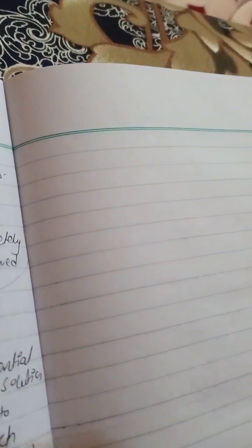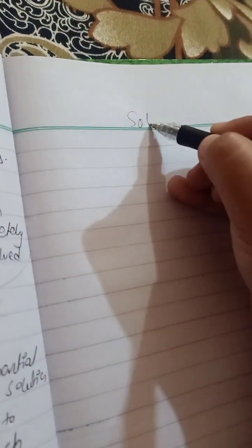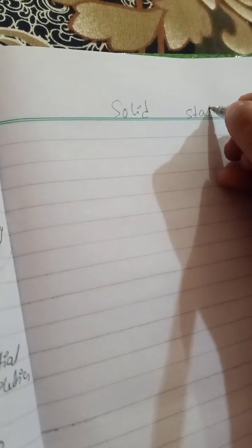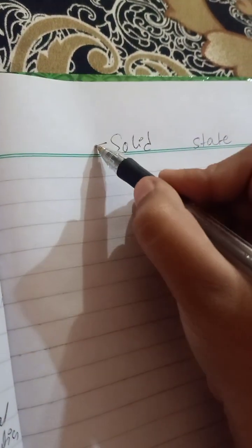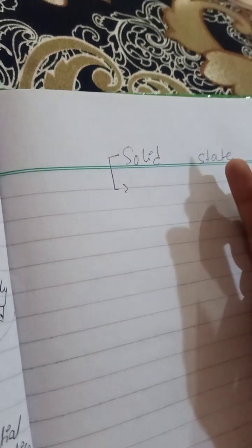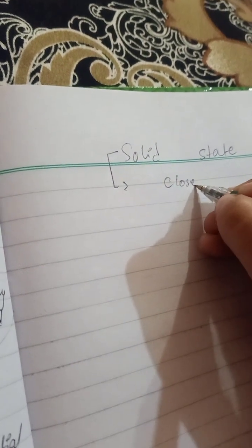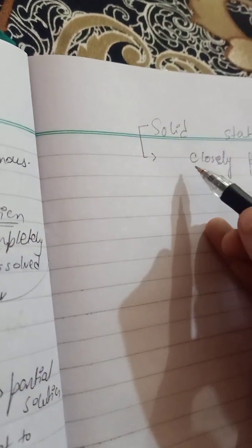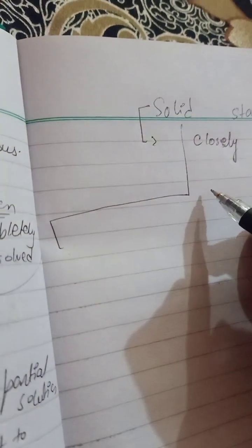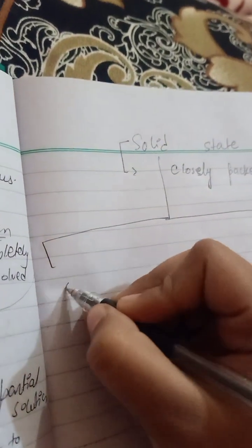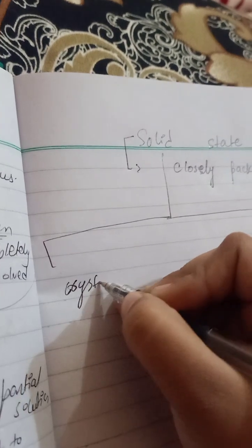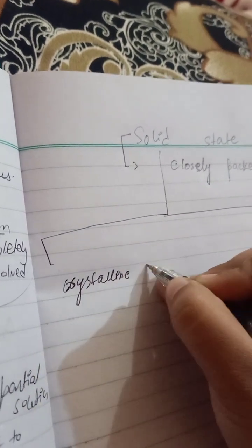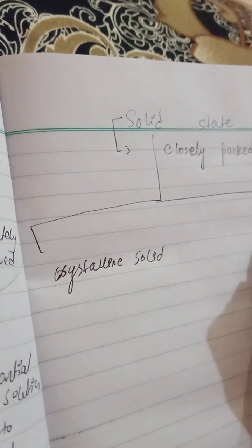Our next chapter we are starting is solid state. If we talk about the solid state, it means the particles of solid are closely or tightly packed and making a definite shape. There are two types of solid: one is crystalline solid and one is amorphous solid.